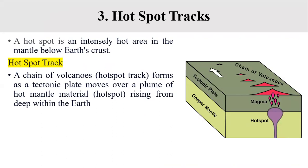Next is hotspot track. A hotspot is a hot area present in the mantle below the Earth's crust. The Earth's crust is the outermost layer of the Earth, and below it is the mantle, which contains this hot area called a hotspot. A hotspot track is a chain of volcanoes formed when a tectonic plate moves. This tectonic plate movement occurs due to the hotspot or due to volcanic eruption.